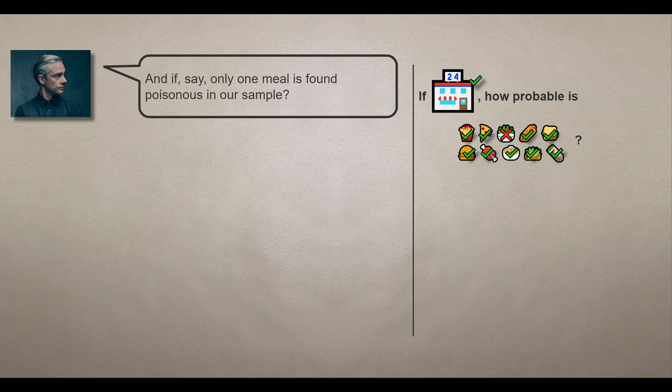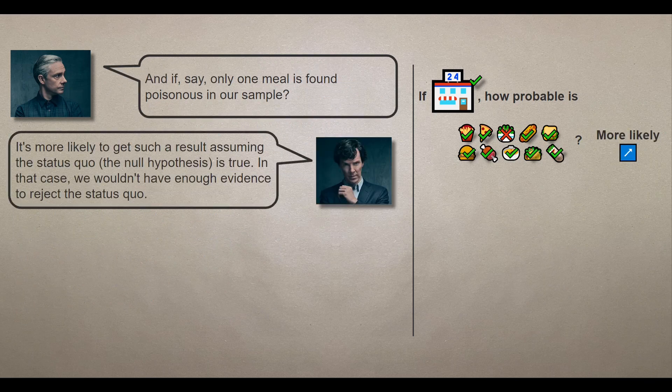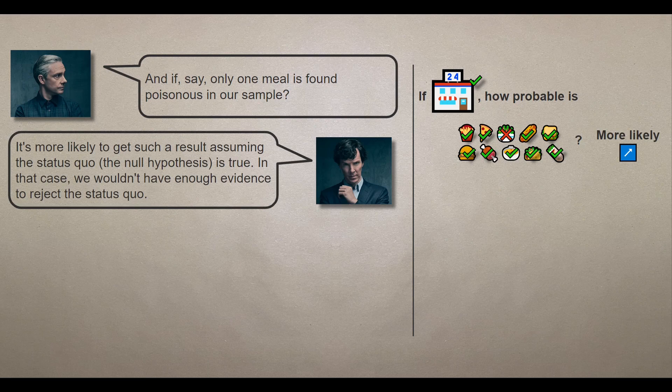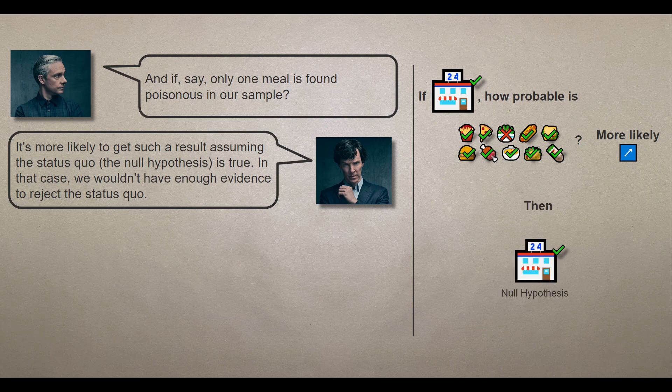And if, say, one meal is found poisonous in our sample, in that case it's more likely to get such results, assuming the status quo, the null hypothesis is true. And we wouldn't have enough evidence to reject the status quo, to reject the null hypothesis.